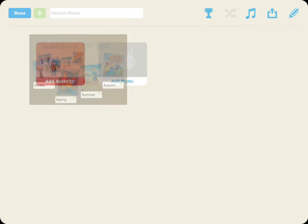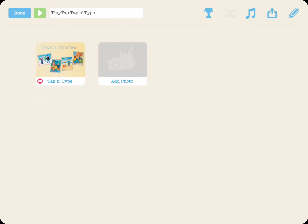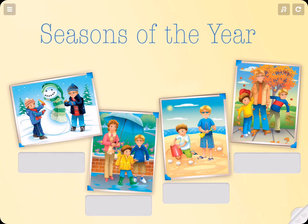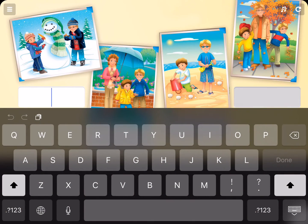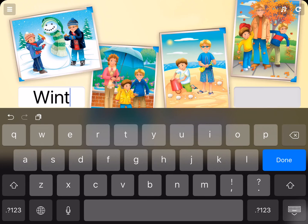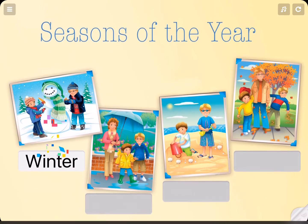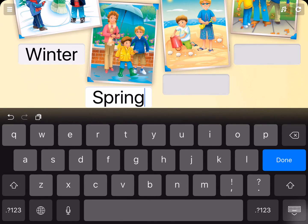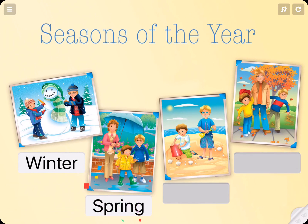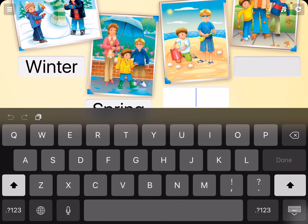Tap Done and your game is ready. Tap to name the seasons of the year. What season is cold and snowy? What season is rainy with lots of new flowers? What season is hot and perfect for the beach?